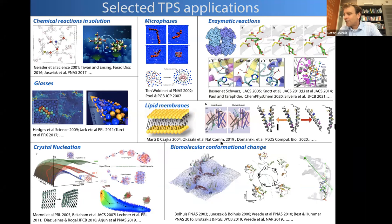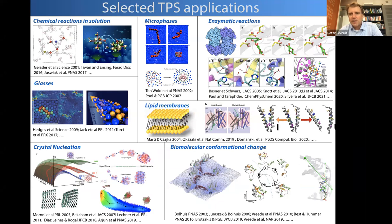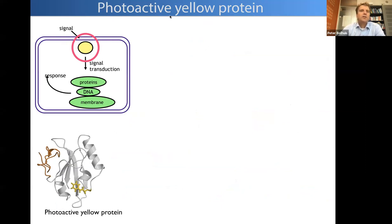Over the years there have been many applications of TPS. Here's a short overview: applications to chemical reactions in solutions, phase transitions, micro-phase separations, enzymatic reactions, reactions in lipid membranes, nucleation problems, and biomolecular conformational changes. I'm going to show you a famous example — the photoactive yellow protein — to illustrate how we conduct transition path sampling and extract information from it.